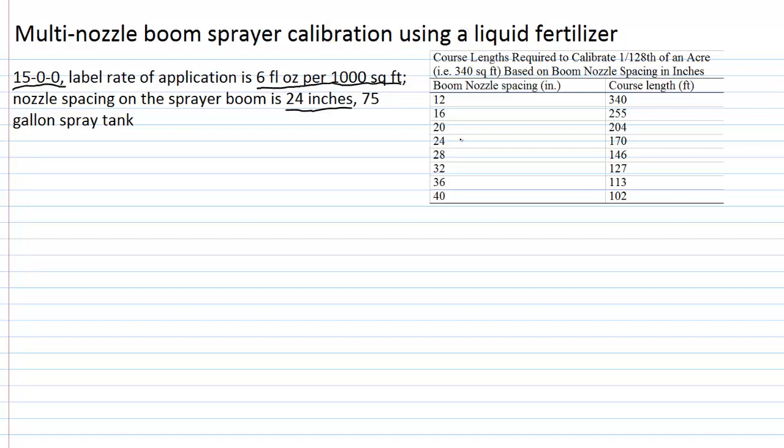340 square feet is 1-128th of an acre. And if you've got 24-inch boom nozzle spacing, you'll measure off an area of 170 feet of course length. You'll run your sprayer at a consistent speed and pressure down that 170 feet long course length, and you'll determine how many seconds it takes you to go from point A to point B. And for the purposes of our example, it's 39 seconds.